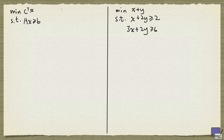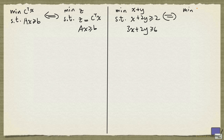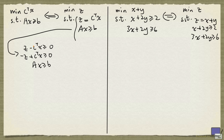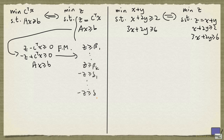So we're going to describe the proof alongside an example illustrating the argument. This minimization problem is equivalent to this problem, where one of the constraints is z equals the objective function. On this example, this will be: minimize z subject to z equals x plus y, x plus 2y ≥ 2, and 3x plus 2y ≥ 6. We rewrite this system as a set of greater than or equal to inequalities, then apply Fourier-Motzkin elimination to eliminate all the x variables. What we'll be left with are inequalities involving only z — some will be lower bound inequalities on z and some will be upper bound inequalities on z, and we'll have a finite number of them.